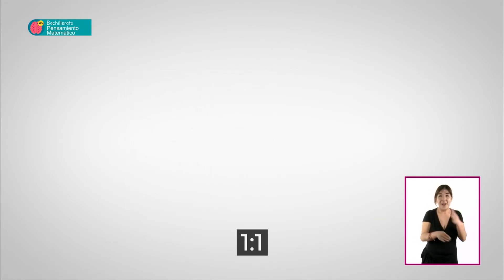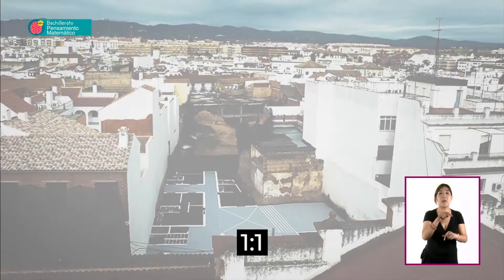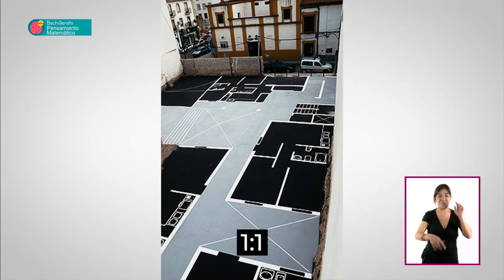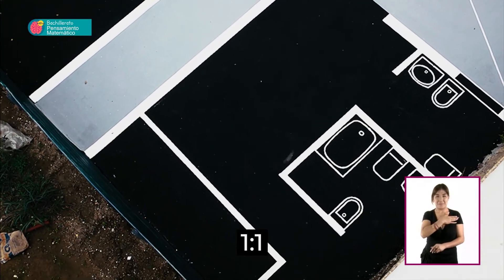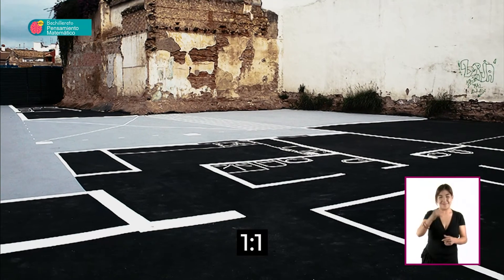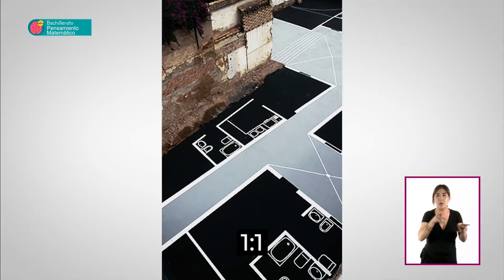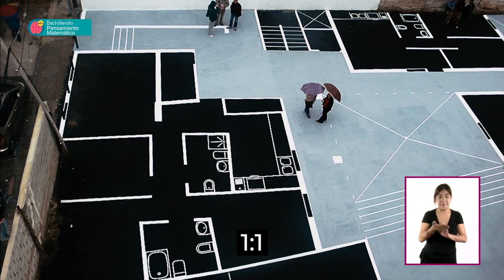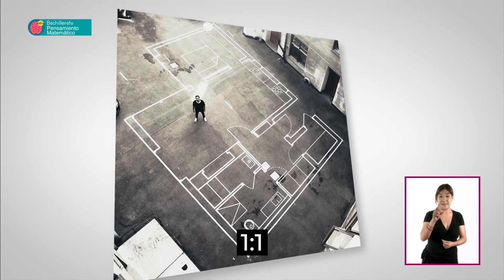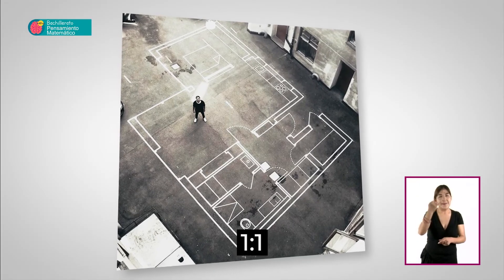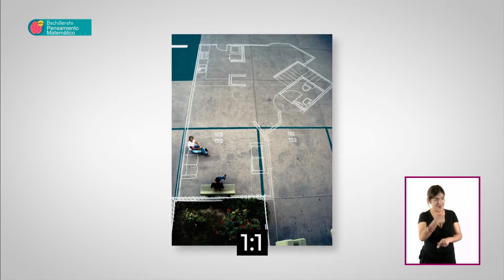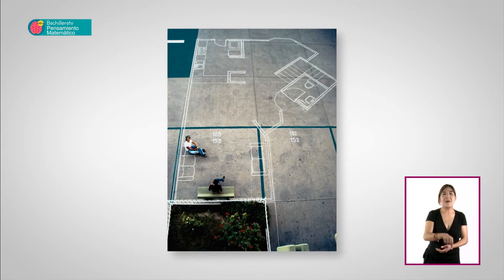¿Puedes imaginarte la utilidad de un plano de escala uno a uno de una vivienda? En 2008, tras retirar los escombros de un terreno en la ciudad de Córdoba, España, la artista Mayder López trazó en el suelo un plano con la distribución exacta de las futuras viviendas que se construirían en el terreno. De esta forma, la estructura tridimensional era sustituida por una experiencia en la que el visitante cambiaba su perspectiva, lo que constituía un reto para los sentidos y la imaginación.